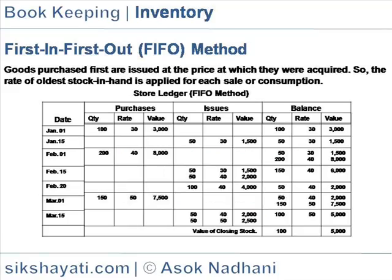First in first out method. Goods purchased first are issued at the price at which they were acquired. The rate of the oldest stock in hand is applied for each sale or consumption.